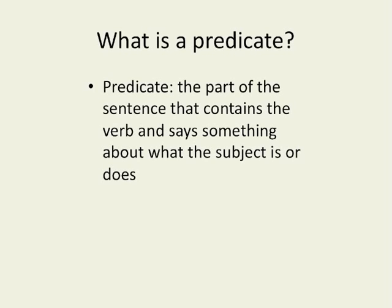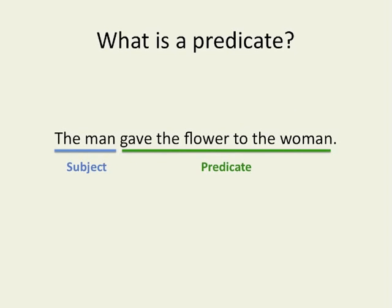In an English sentence, the predicate is everything other than the subject of the clause. The predicate includes the verb. So in the sentence 'the man gave the flower to the woman,' the man is our subject and 'gave the flower to the woman' is the predicate.